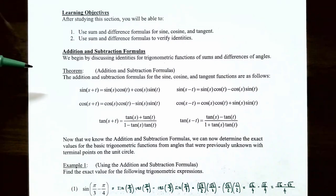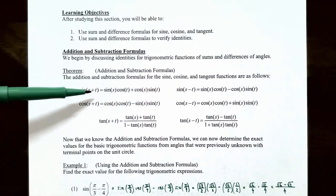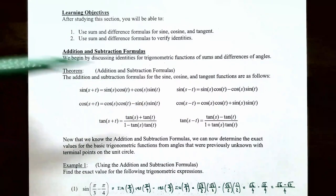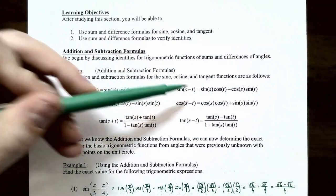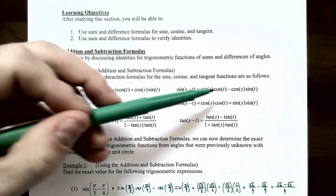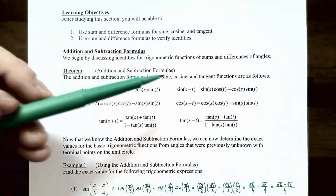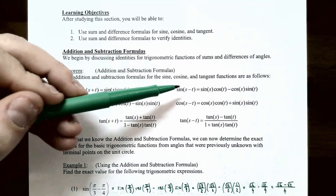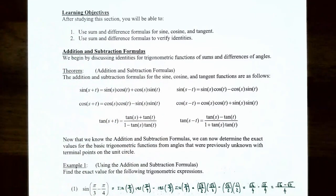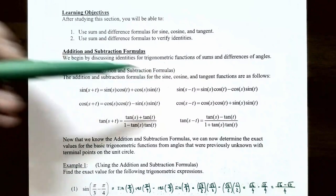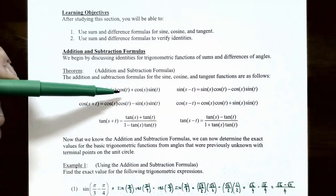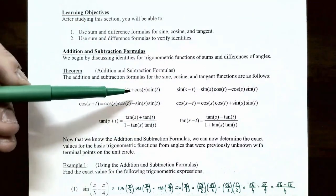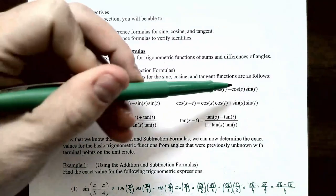The theorem — the addition and subtraction formulas for the sine, cosine, and tangent functions are as follows. Sine of (s + t) equals sine(s)·cos(t) plus cos(s)·sin(t). And sine of (s - t) equals sine(s)·cos(t) minus cos(s)·sin(t). Notice the sine between the two terms is the same sign as the sum or difference: the formula is sine of the first times cosine of the second, plus or minus cosine of the first times sine of the second.